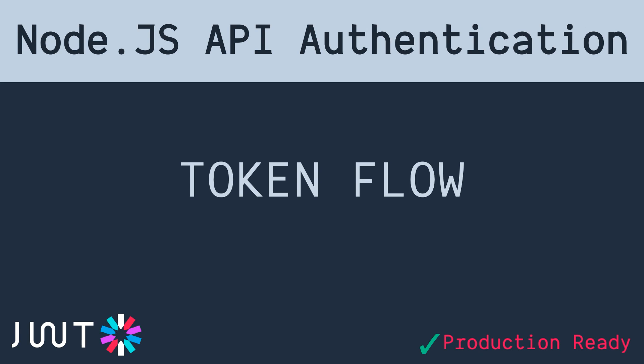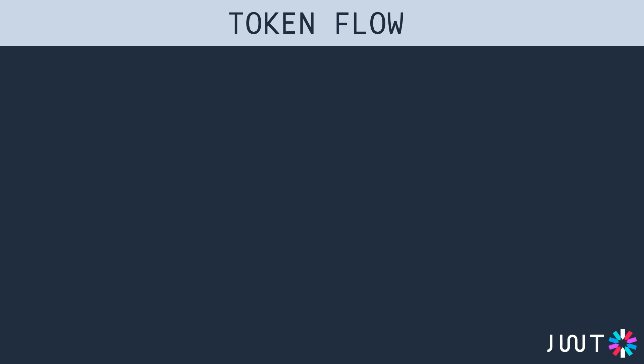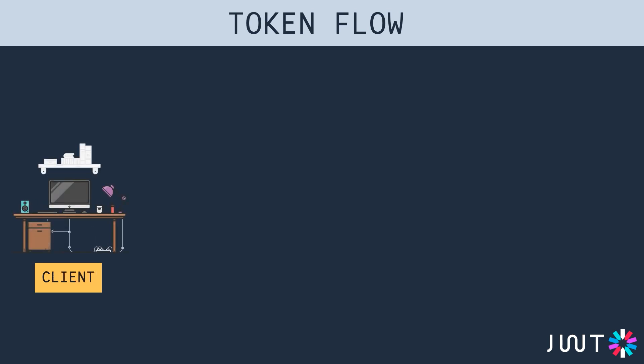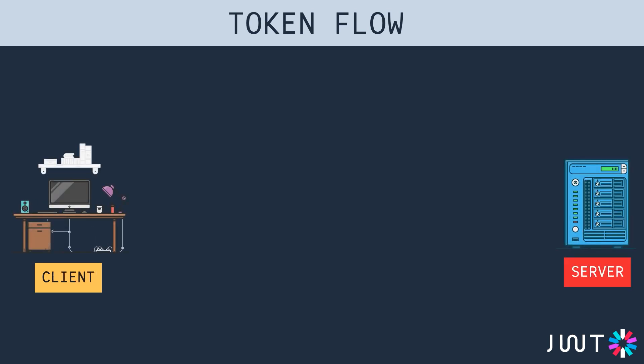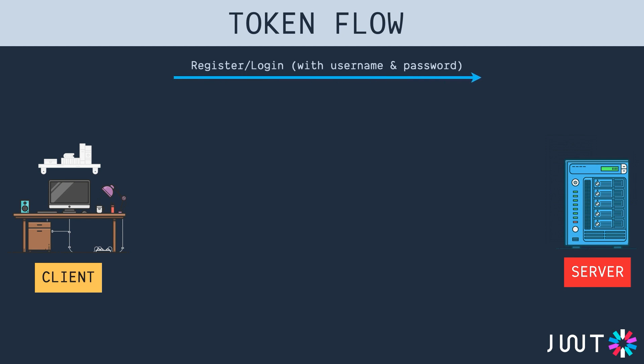In this video, let's look at the token flow inside our application. On the left we have the client and on the right we have the server. When a client makes a register or login request with his username and password, the server checks if the credentials are valid, and if so, the server sends back a pair of tokens — the access token and the refresh token.